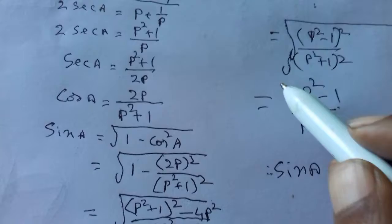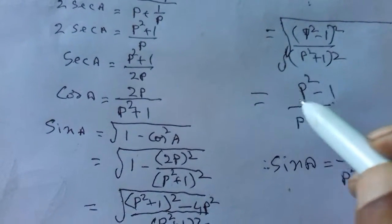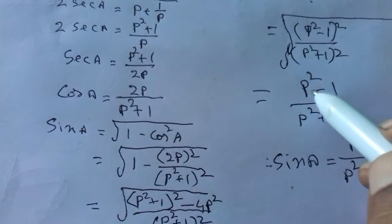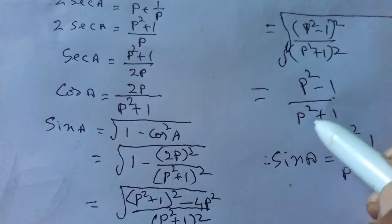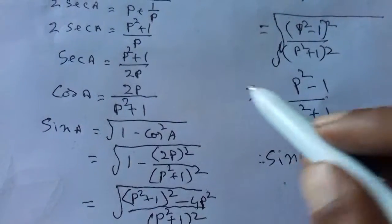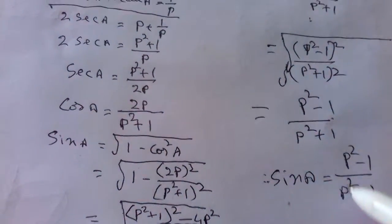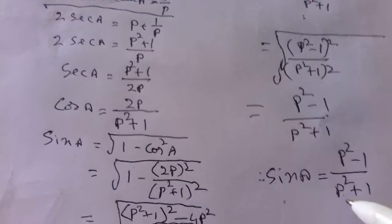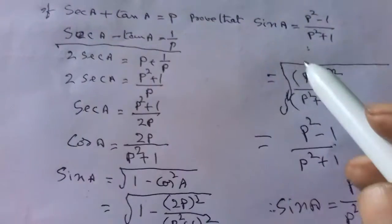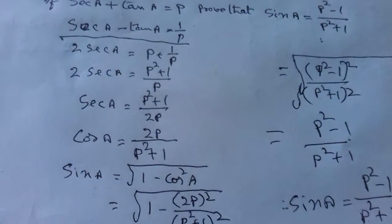The value of P square plus 1 whole square minus 4P square is equal to P square minus 1 whole square by P square plus 1 whole square. Taking the square root, squares are cancelled, giving sinA equal to P square minus 1 by P square plus 1. Hence proved.